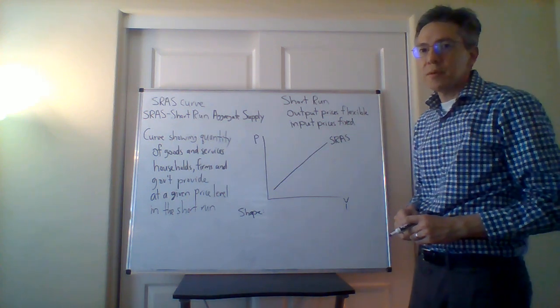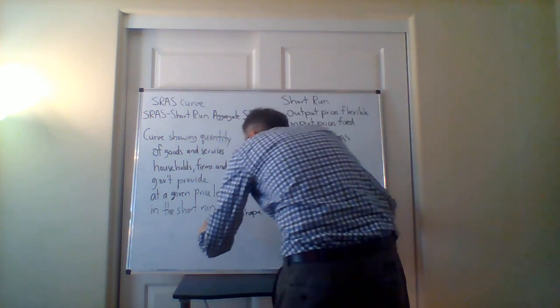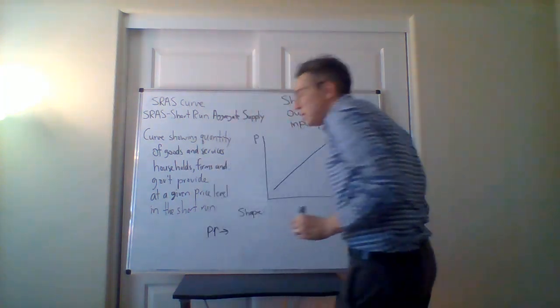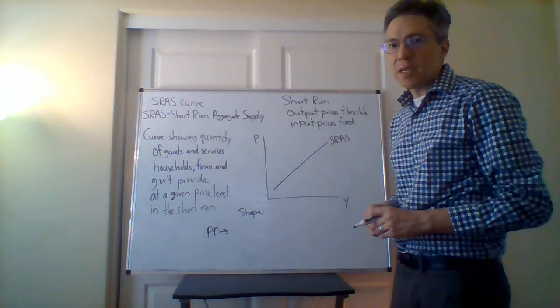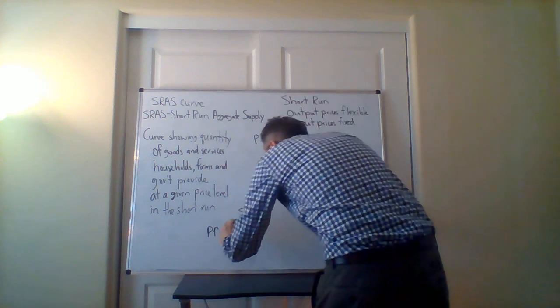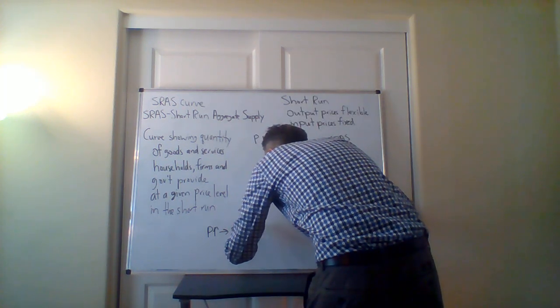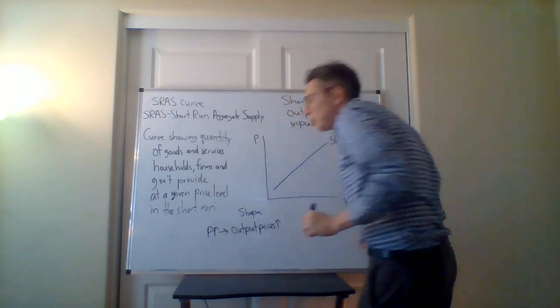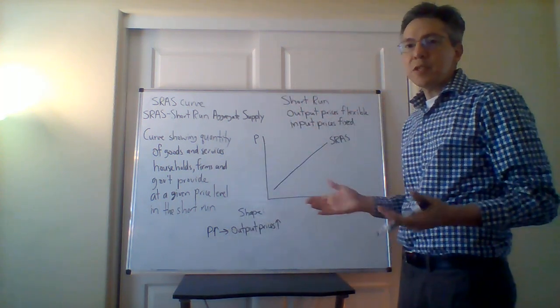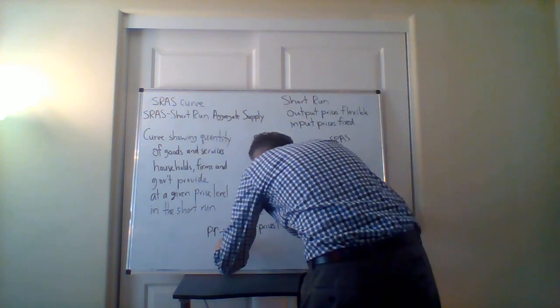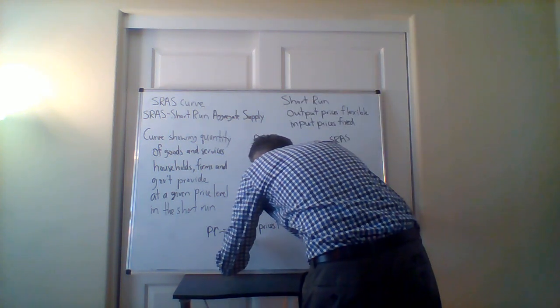So in terms of the shape, what we can do is look and say, what happens when the prices go up? So when we say the price level is increasing, what we're actually referring to are the output prices. So the output prices are going up. Well, what did we say about the short run? The input prices are not. So the input prices are fixed.